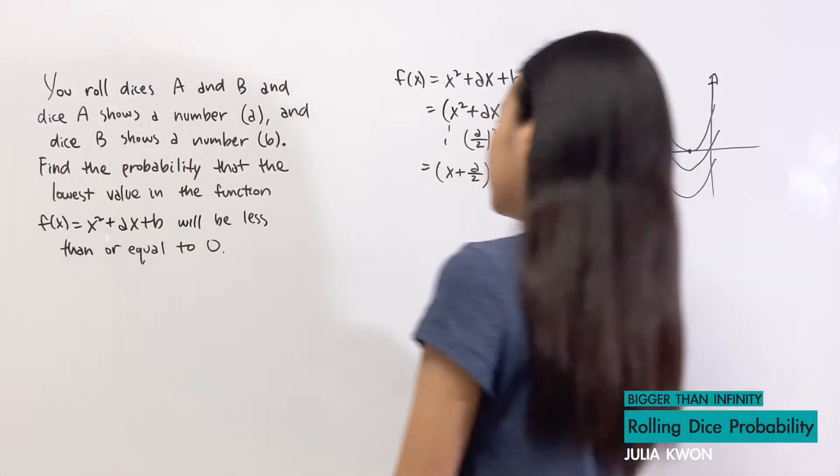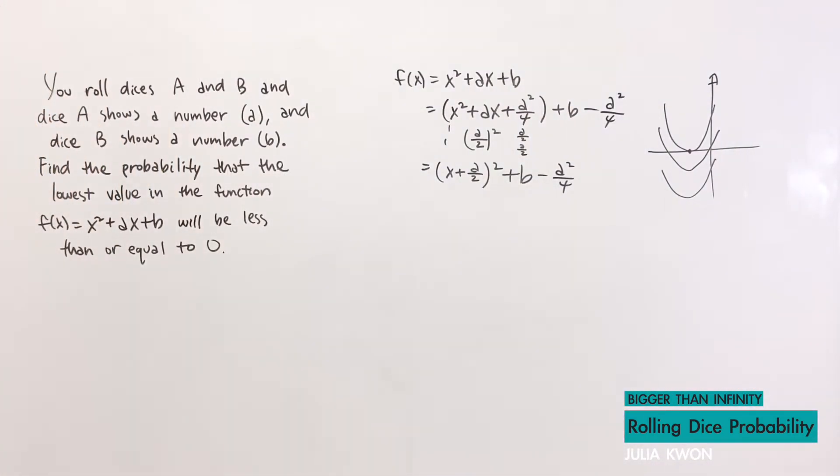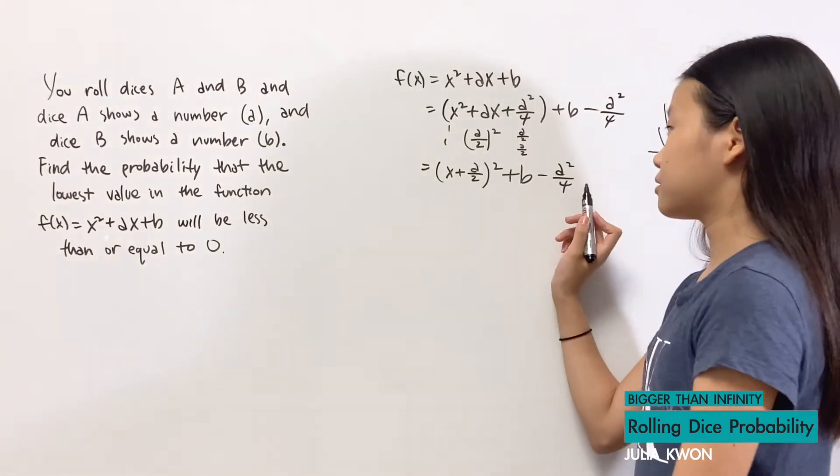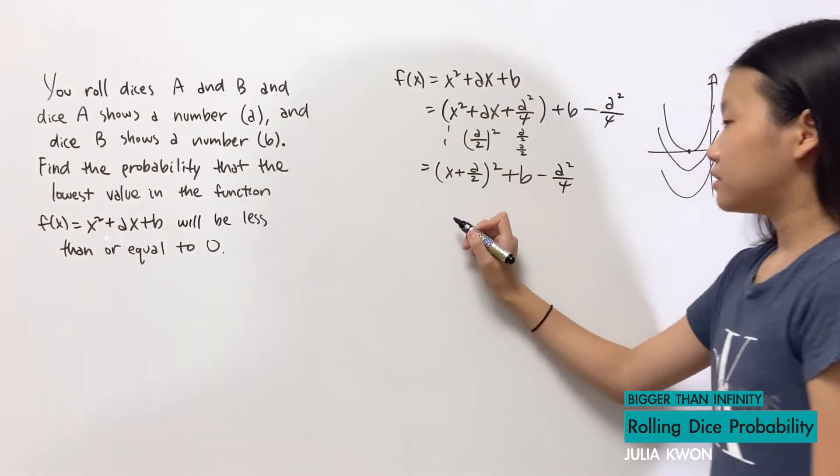And the problem asks us to find the probability that the lowest value in the function will be less than or equal to 0. And the height of this function all depends on b - a²/4.